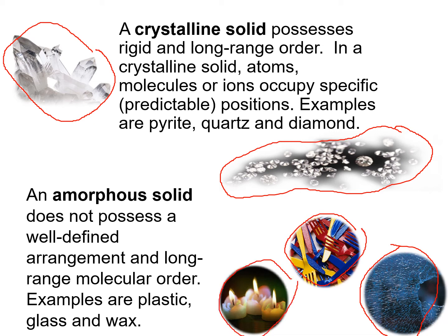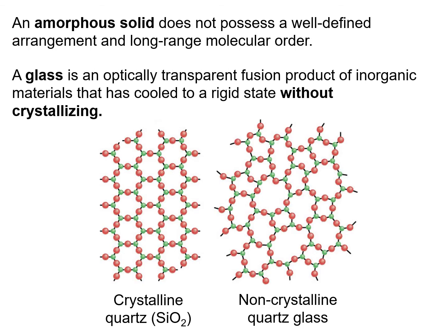They do not possess a well-defined arrangement and they do not have long-range molecular order. Glass is an optically transparent fusion product of inorganic material that has been cooled down to a rigid state without crystallizing. On the left, you can see an example of a crystal which has a well-defined arrangement and long-range molecular order. But on the right, you can see the amorphous solid having a non-crystalline structure.